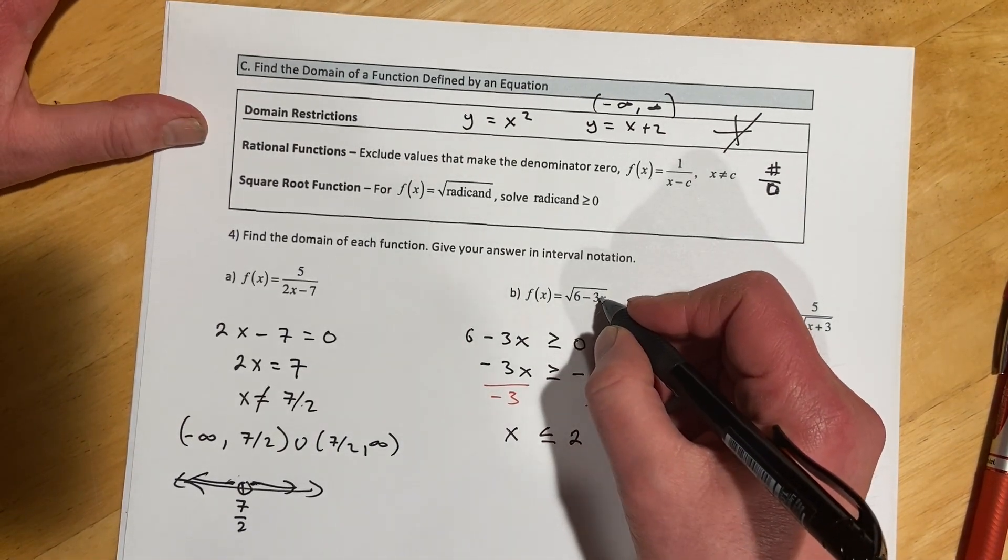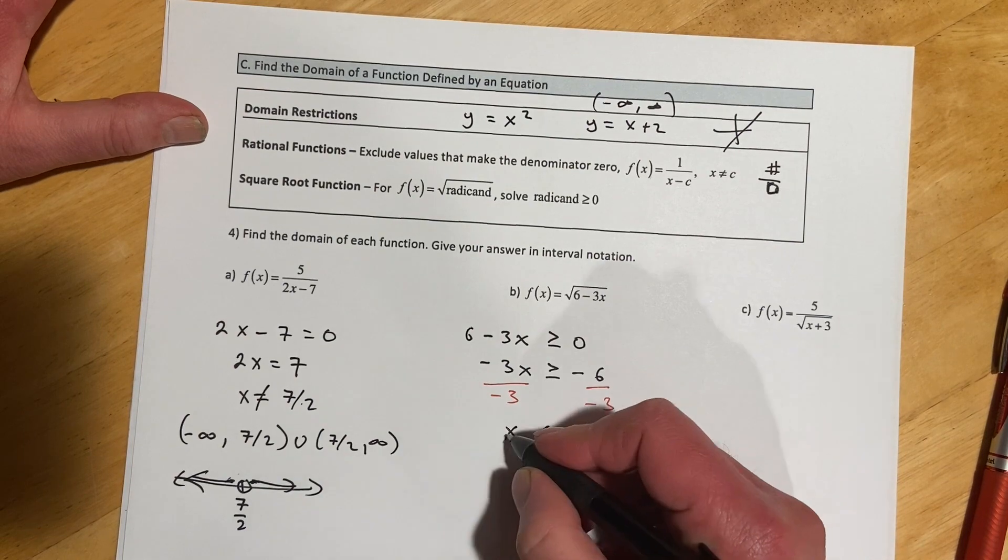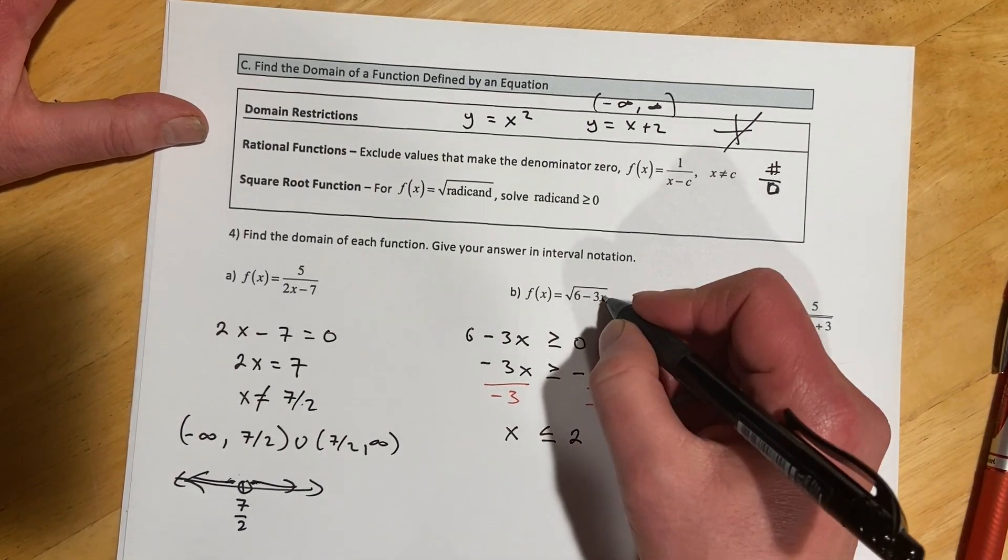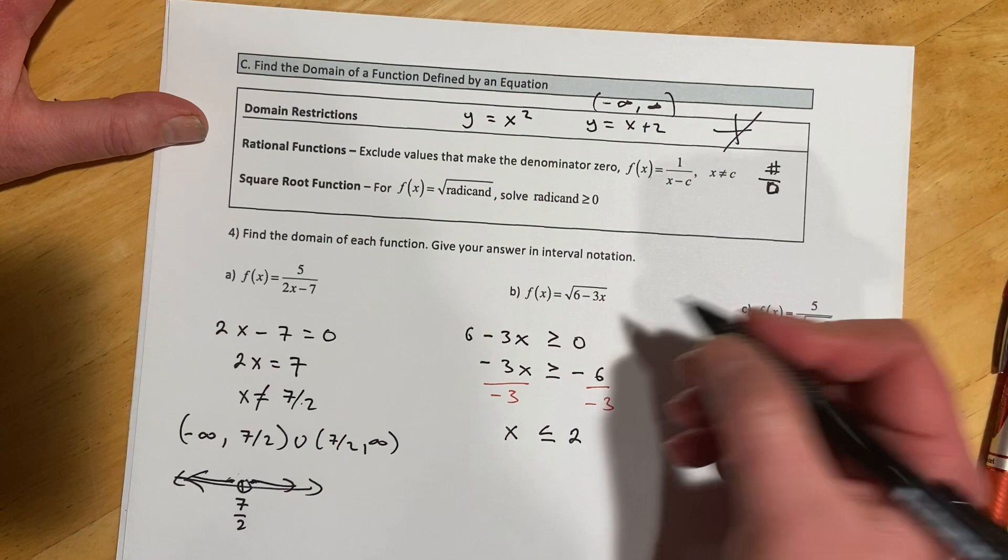And if you try those numbers, those are the ones that will work. You know, x less than or equal to 2, try x equals 0, 6 minus 0, yep, that's true.